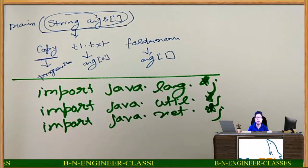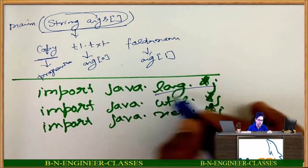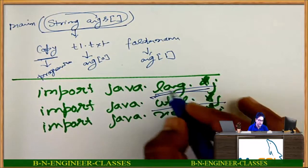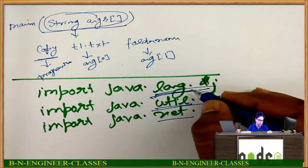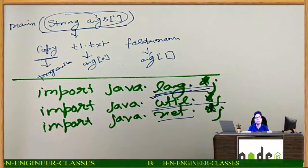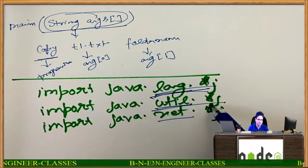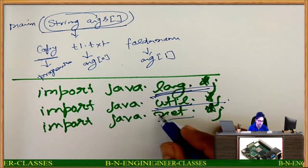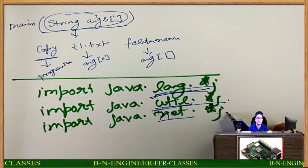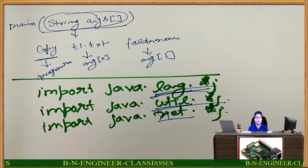Such packages we are using at the beginning of a program because all the inbuilt methods are defined inside such packages — in lang, in util, in net, etc. The meaning of dot-star is: I am going to import all the classes of lang; dot-star on util means I am importing all the classes of util; and dot-star on net means I am importing all the packages inside that.